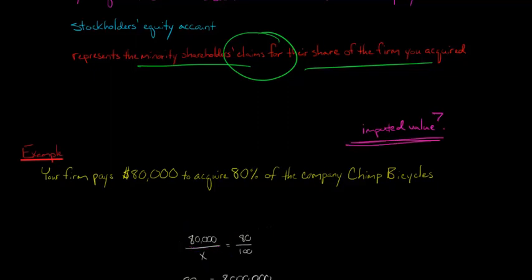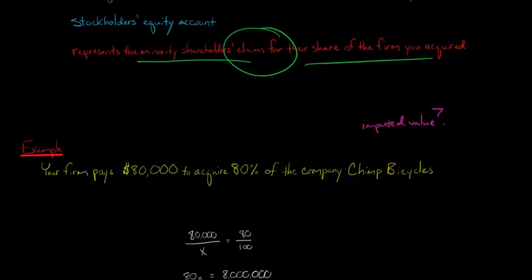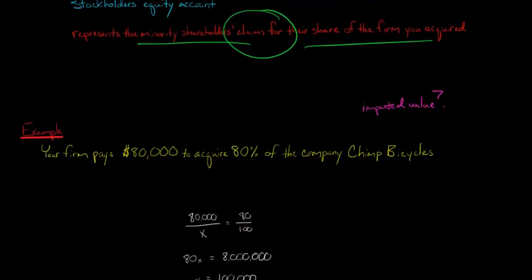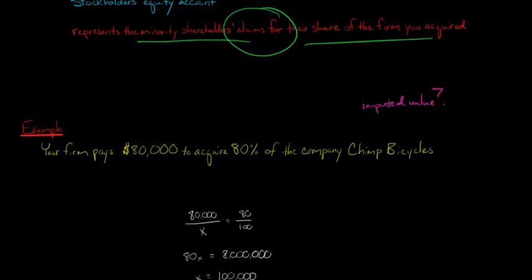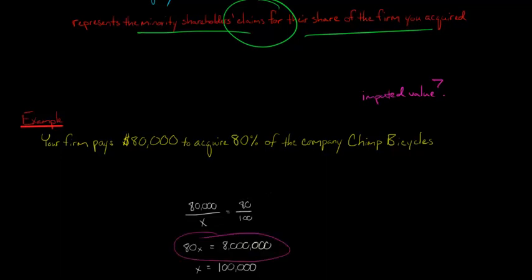X is that imputed value. We can cross-multiply, just do a little algebra here. 80 times X is equal to 80,000 times 100. I'm just cross-multiplying here and then setting the things equal to each other. So 80X is equal to 8 million.